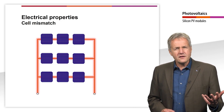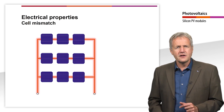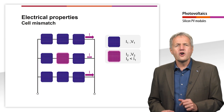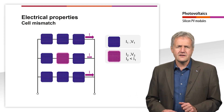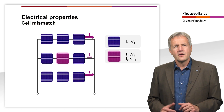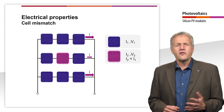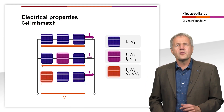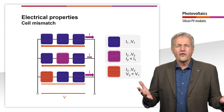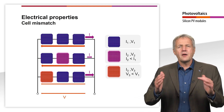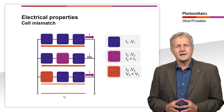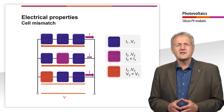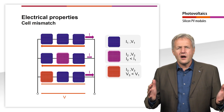If one cell has a slightly lower short circuit current than the others, its current determines the string current of all cells connected in series. Correspondingly, for cells connected in parallel, the string with the lowest voltage determines the module voltage. Overall, module voltage and current are thus somewhat lower than in the ideal case in which all cells are identical. As a result, the efficiency and fill factor are also lower.